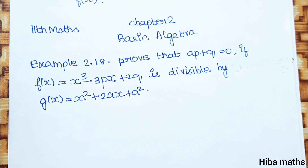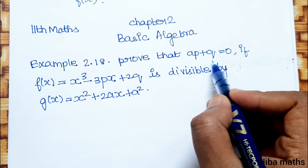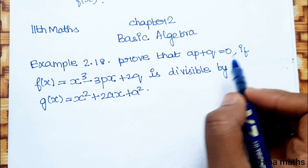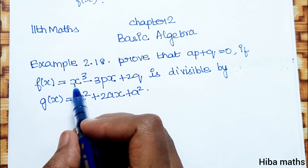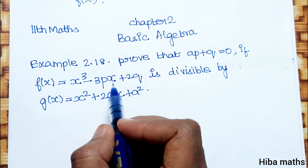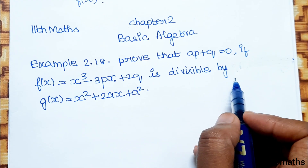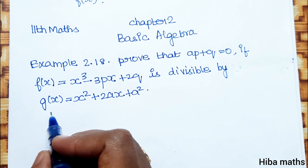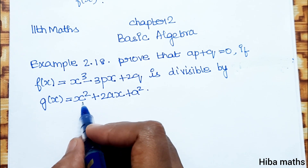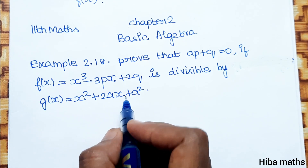Example 2.18: Question — prove that Ap plus q is equal to 0, if f of x is equal to x cube minus 3px plus 2q is divisible by g of x is equal to x square plus 2ax plus a square.